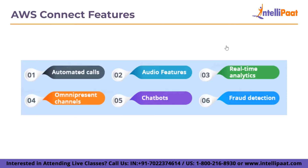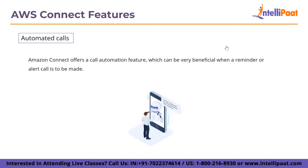The first feature is automated calls. Amazon Connect offers a call automation feature which can be very beneficial when a reminder or alert call is to be made — for example, credit card fraud warnings or reminders like booking a flight. This gives a trustworthy and excellent service experience.